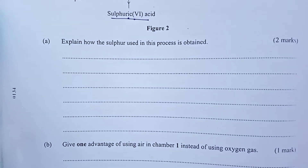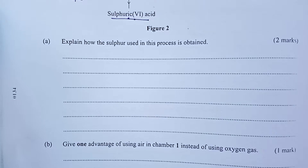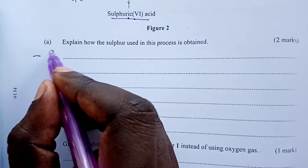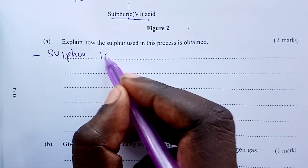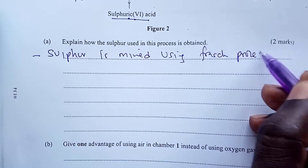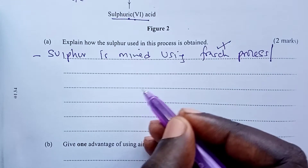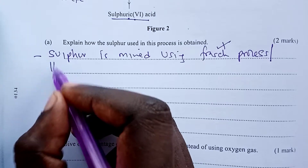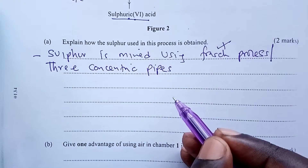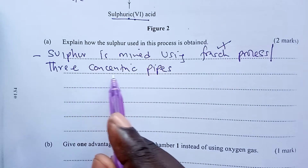The first question asks: explain how the sulfur used in this process is obtained. This is where the Frasch process comes in. You are supposed to write that sulfur is mined using the Frasch process — that gives you the first half mark. Alternatively, a student could describe three concentric pipes, meaning three pipes laid one inside the other, and that would also give the first half mark out of two.